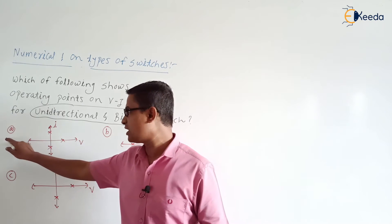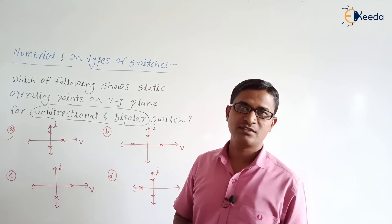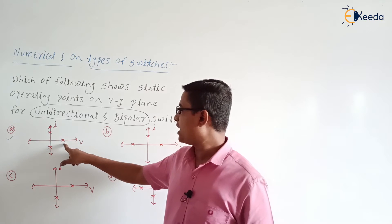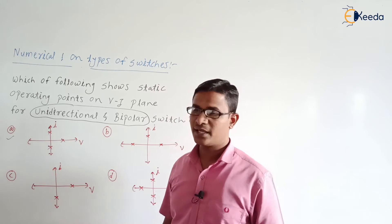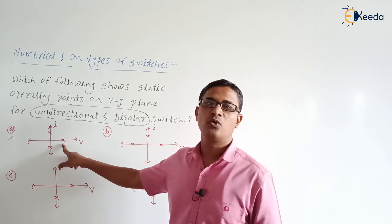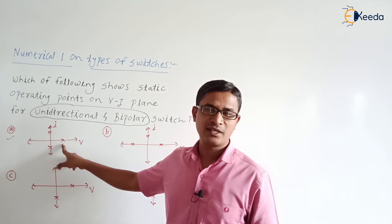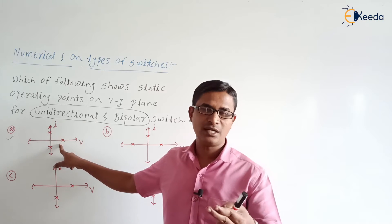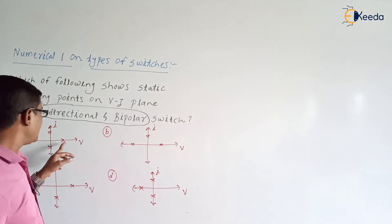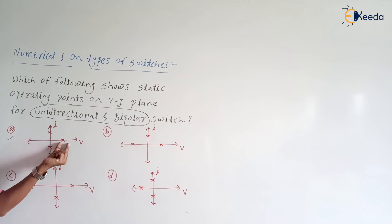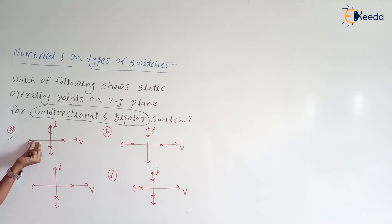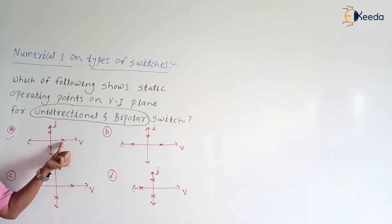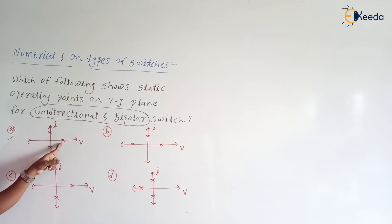Let us check the first characteristic. Here we have three operating points. Corresponding to the first operating point, the voltage is positive and current is zero. Current zero means the switch is in the off state and the switch is blocking the forward voltage — it is blocking the positive voltage. The switch is not blocking the negative voltage when it is in the off state. So the type here is unipolar.